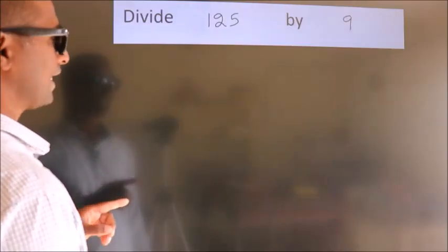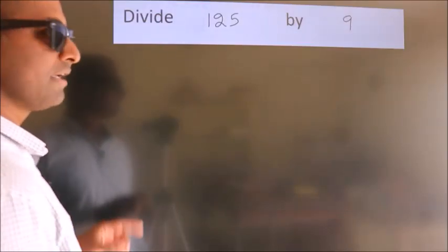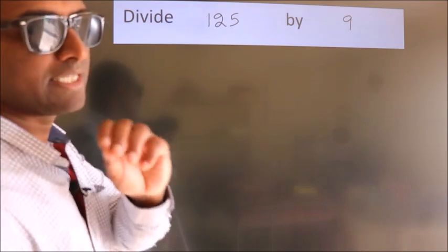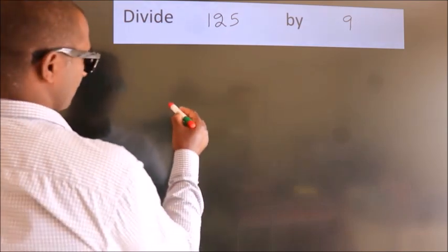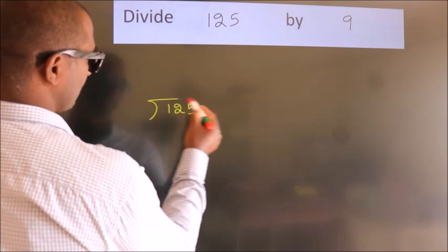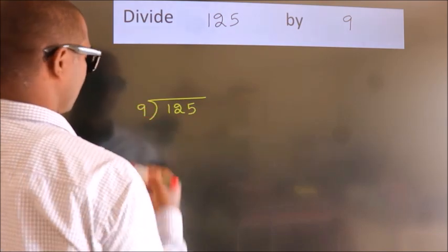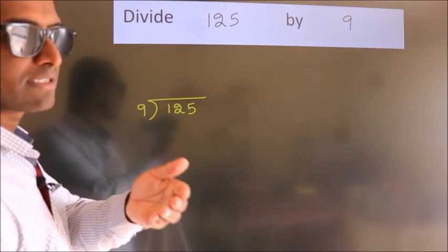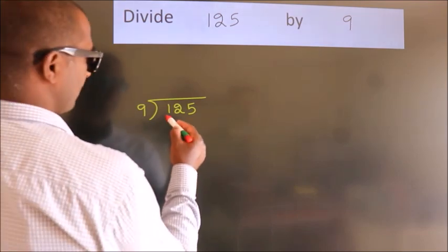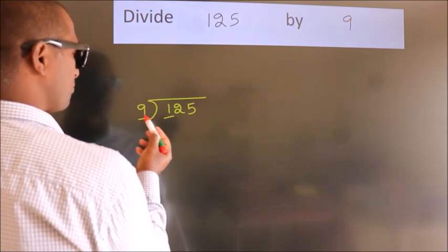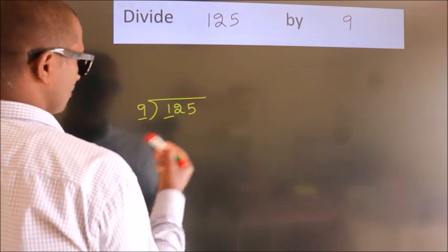Divide 125 by 9. To do this division we should frame it in this way: 125 here, 9 here. This is your step one. Next, here we have one. One is smaller than nine, so we should take two numbers.